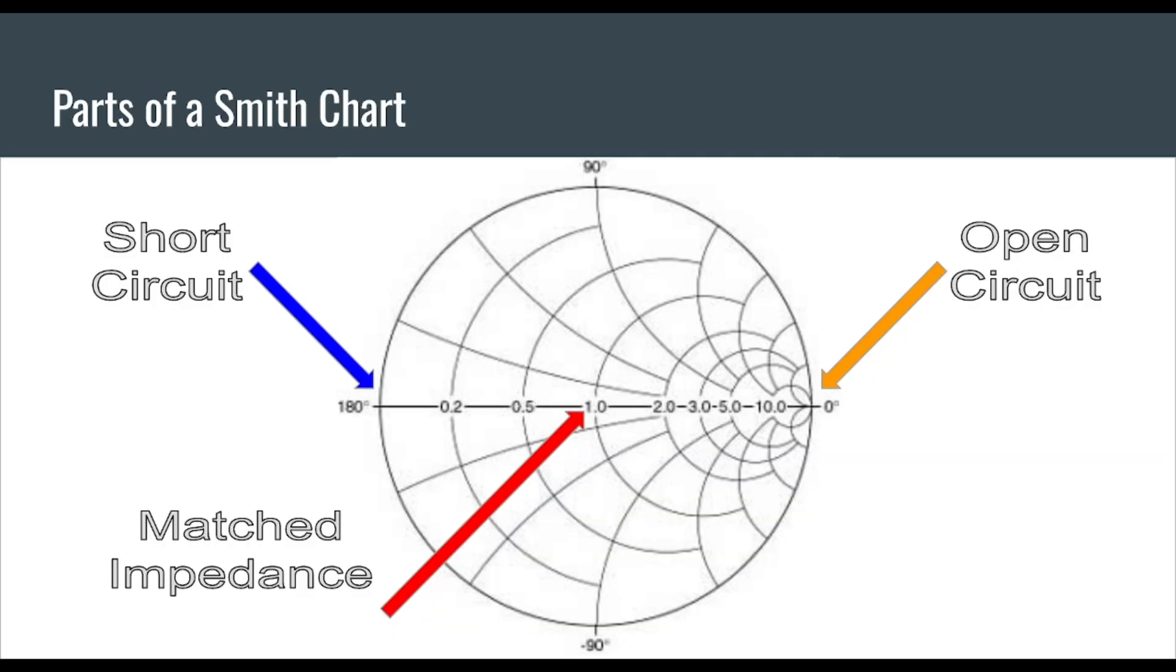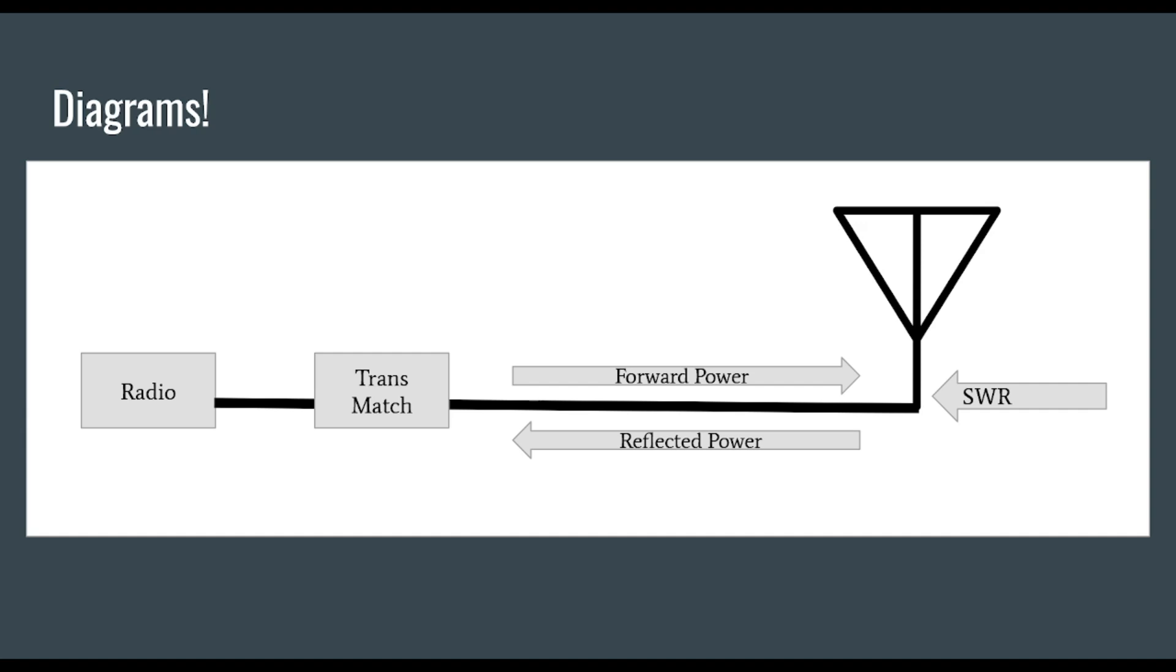Across the line of pure resistance all the way to the left would depict a short circuit with an infinity SWR. In the center is our matched impedance or our system impedance, generally 50 ohms for amateur radio. All the way on the right hand side is a condition for an open circuit which would also show you an infinity for SWR.